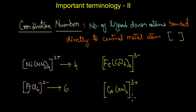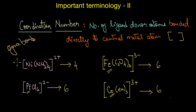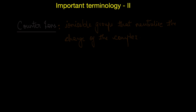In complexes that have bidentate ligands such as oxalate or ethylenediamine, the coordination number of iron and cobalt in these complexes are both six. Both oxalate and ethylenediamine are bidentate ligands, meaning they bind to the central metal atom through two donor atoms. Remember that the coordination number of a central metal is determined only by the number of sigma bonds — pi bonds between the ligand and the metal are not included.